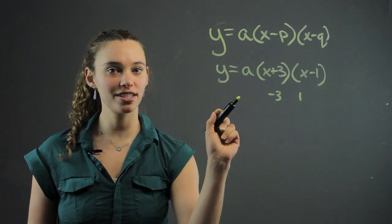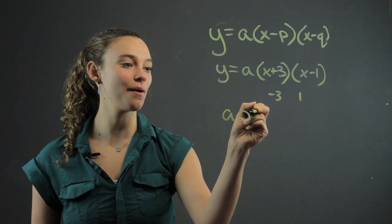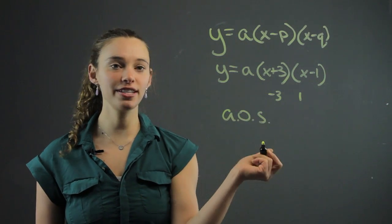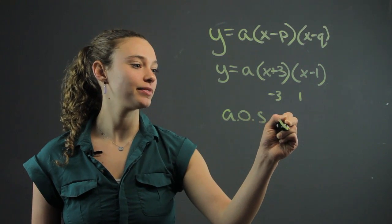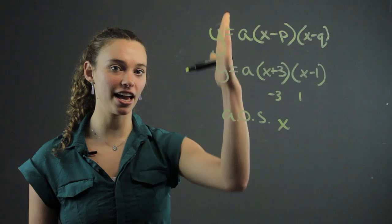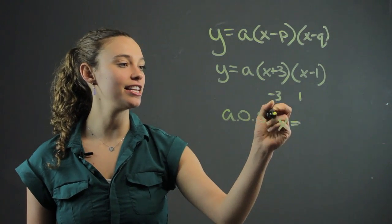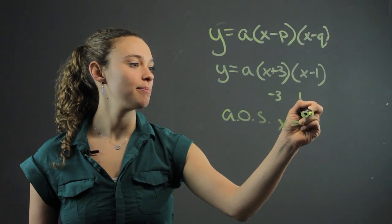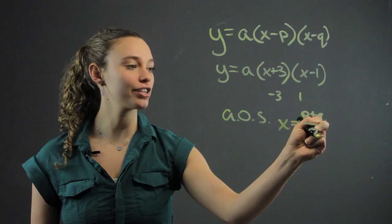Now, we want to find the axis of symmetry, AOS. We're going to find that by the axis of symmetry is going to be a vertical line x equals p plus q over 2.